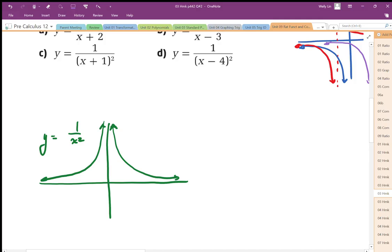For part c, that's a positive 1 shift, so it's shifted 1 to the right, so our vertical asymptote shifts 1 to the right. Everything else remains the same, so we still have a horizontal asymptote at 0.